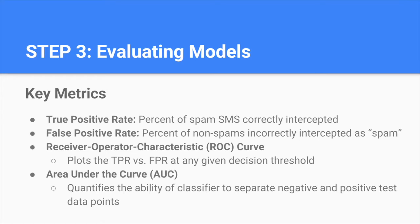Step three is to evaluate the results of these four models. We evaluated our models using two main dimensions: true positive rate, which is the percentage of actual spam messages accurately intercepted, and false positive rate, which is the percentage of actual non-spam messages incorrectly classified as spam. The ROC curve, and the area underneath it, give a comprehensive combination of these metrics at each decision threshold — the probability cutoff for classifying an SMS as spam.